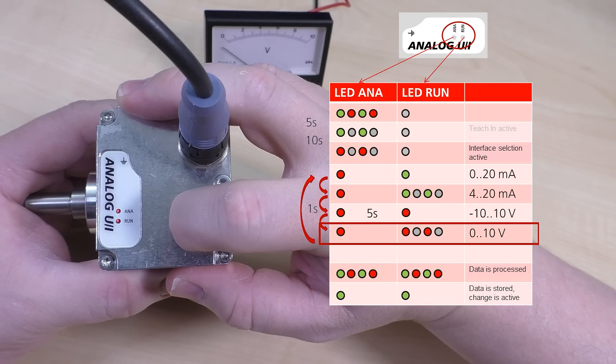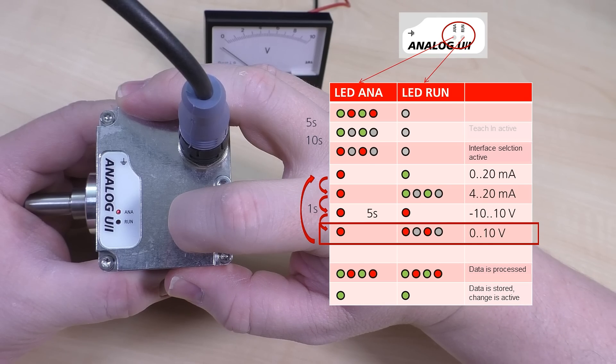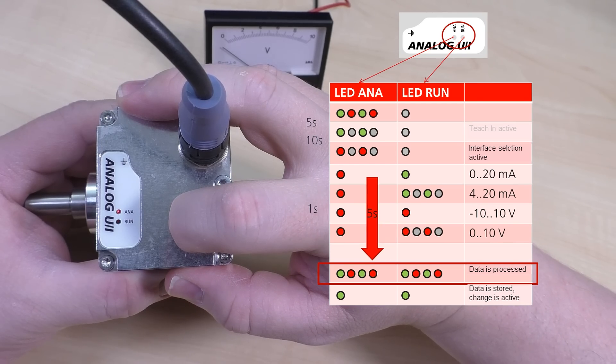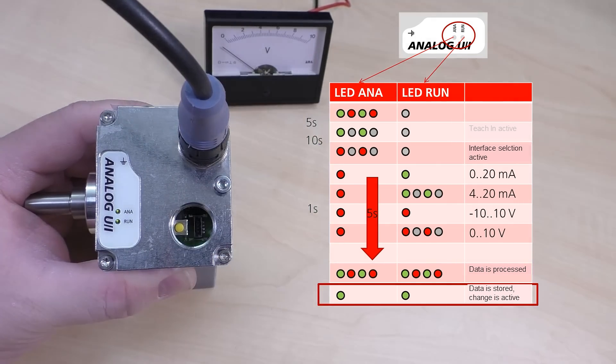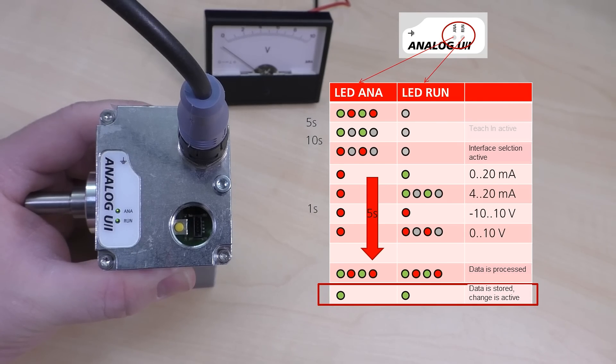Press and hold the button for five seconds to save the selected output mode to the device. Both LEDs will flash red and green to indicate that the selection has been permanently programmed into the device. Once the encoder has been fully programmed, both LEDs will turn green indicating that the analog output is active.